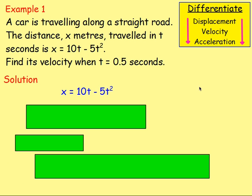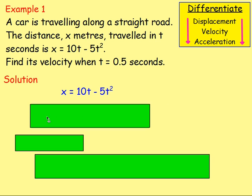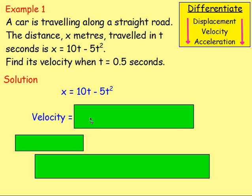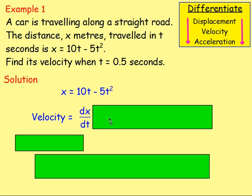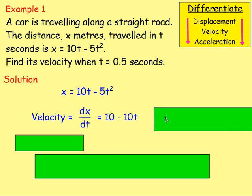Let's try a couple of examples. Example number 1: a car is travelling along a straight road. The distance x metres travelled in t seconds is x = 10t − 5t². Find the velocity when t = 0.5 seconds. Starting with x = 10t − 5t², to find the velocity, remember velocity is the rate of change of displacement, so we differentiate x with respect to time. Differentiating gives 10 − 10t.